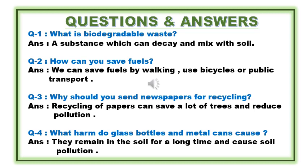Use bicycles or public transport. Question number three: why should you send newspaper for recycling? Answer: recycling of paper can save a lot of trees and reduce pollution. Question number four: what harm do glass bottles and metal cans cause? Answer: they remain in the soil for a long time and cause soil pollution. This is the end of chapter number 13.